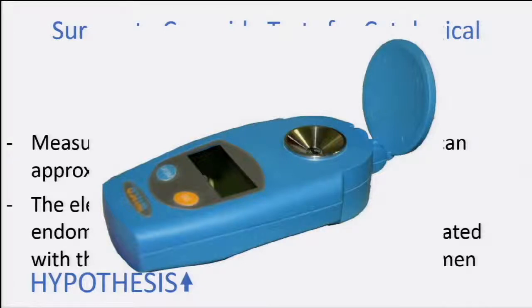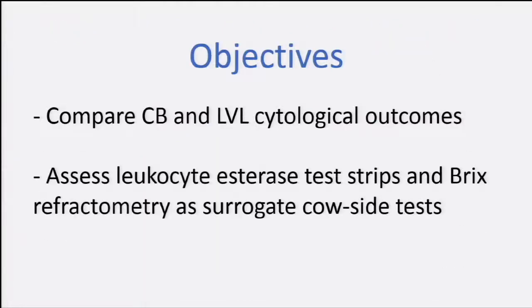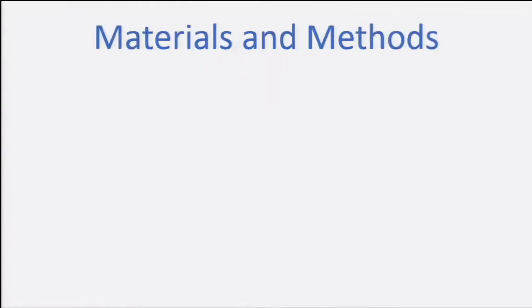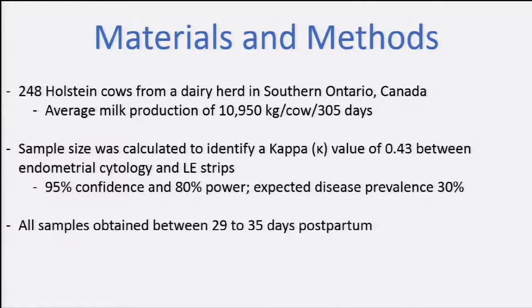It's portable and very easy to use. So the objectives are to compare the cytobrush versus the lavage cytological outcomes, and to compare these outcomes with the cow-side tests — being the leucocyte esterase strips and Brix refractometry. This was done on a normal Canadian farm with mid-production of 11,000 kg per lactation. We used 248 cows, and we did a sample size calculation based on a previous study in Canada, where they found a kappa agreement between cytology and leucocyte esterase strips of 0.43, expecting a prevalence of 30% with a 95% confidence interval and 80% power.